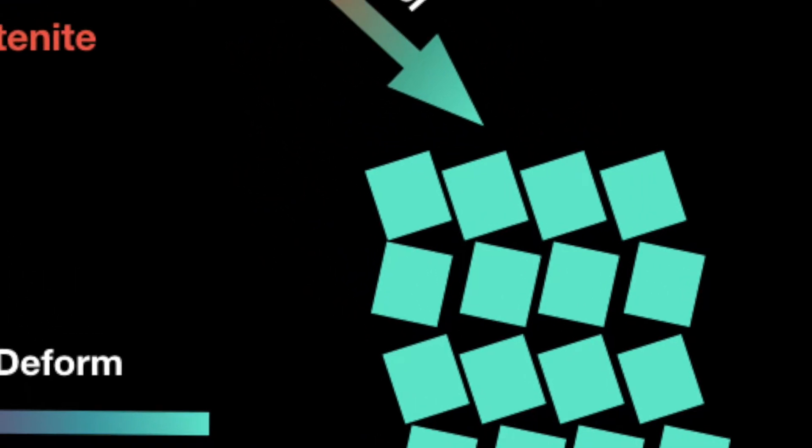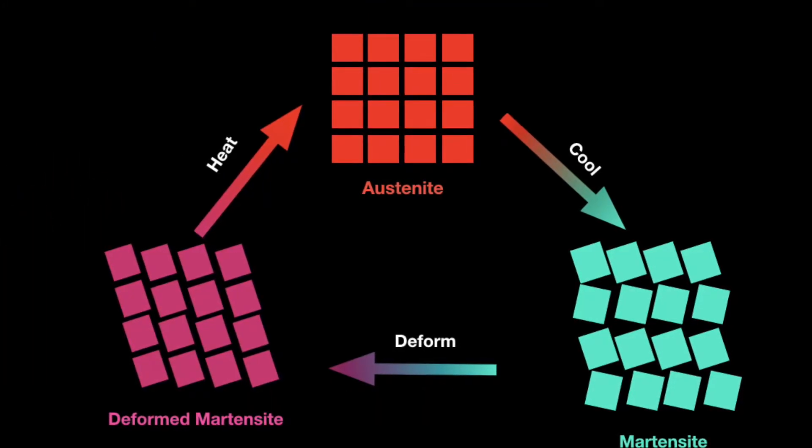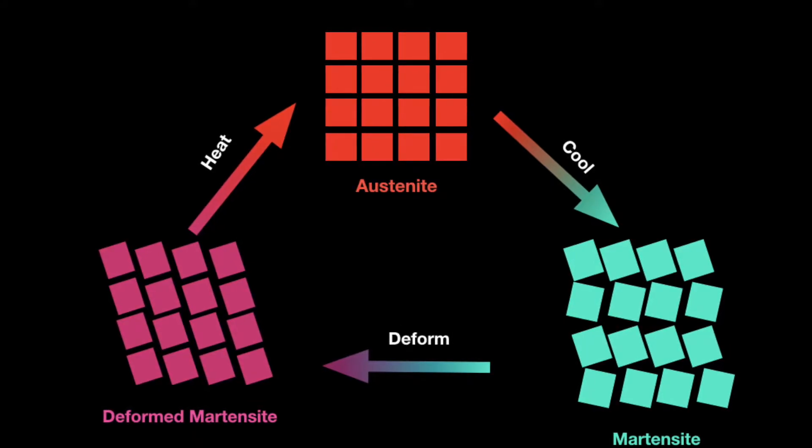In order to program a shape into the metal, the wire is heated above the transition stage and then molded. At these stages, the crystal structure of the alloy changes from one form to another.